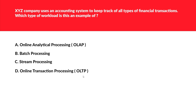This question covers OLAP, batch processing, stream processing, and OLTP. A company uses an accounting system to track financial transactions. The first option is OLAP — remember, OLAP is used for big data or complex analytics like data mining, so it doesn't fit here. Batch processing is for scheduled tasks, and the question mentions no timing, so batch is also wrong.